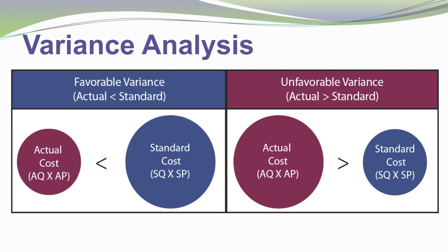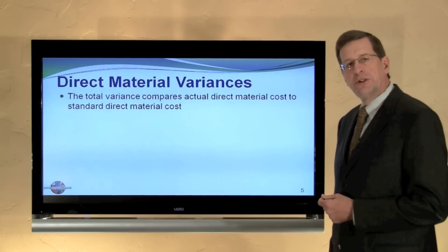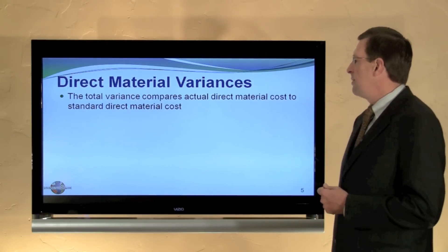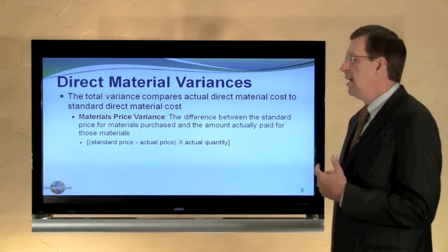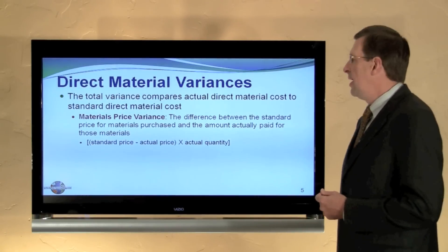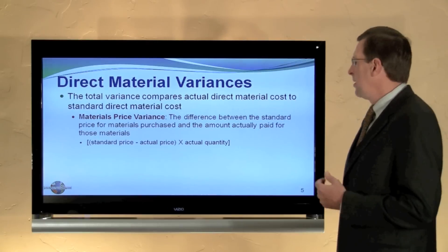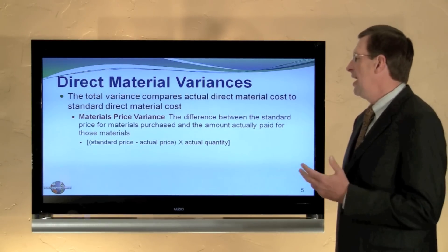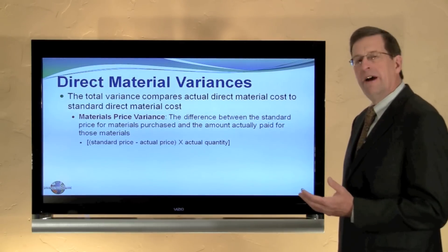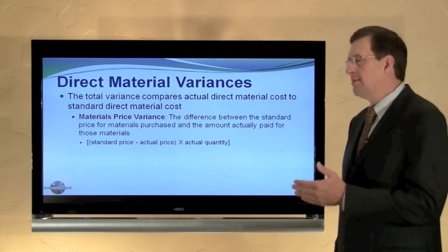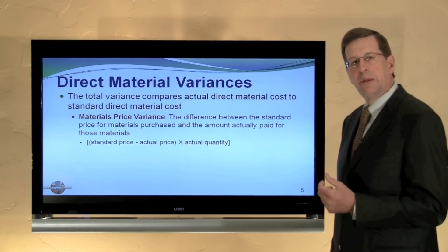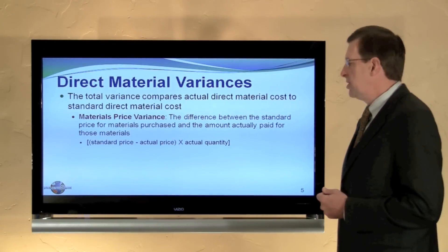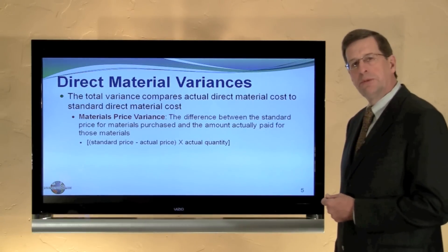We need to determine the causes for that difference. Looking first at direct material variances, the total variance compares actual direct material costs to the standard direct material cost, but can be further divided into a materials price variance, which is the difference between the standard price for materials purchased and the actual amount paid. By formula: standard price minus actual price — that's the per unit difference — times the actual quantity purchased and used gives us the materials price variance.